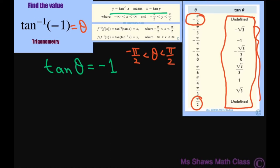Now it's undefined at these two places, so that means it goes off to infinity here. Therefore, you can just look for negative 1. If you look for negative 1, it's negative π/4. So your θ is going to be negative π/4.